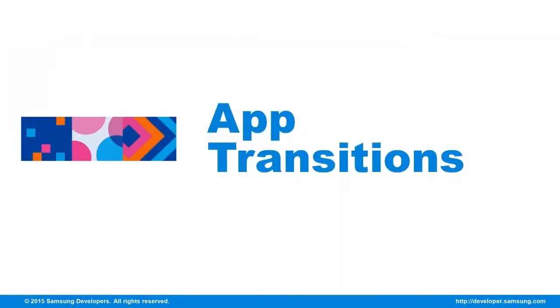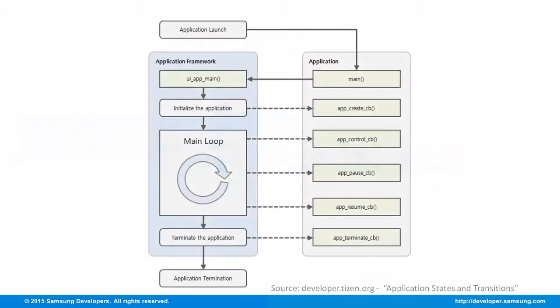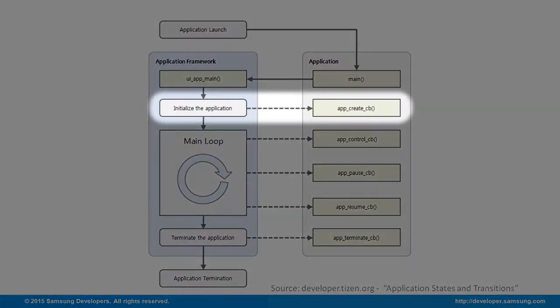For a larger picture of the callbacks and states, let's summarize the application framework. From the five states, it has corresponding transition handlers. In the application framework, we initialize the application first, calling the app create callback for its transition.